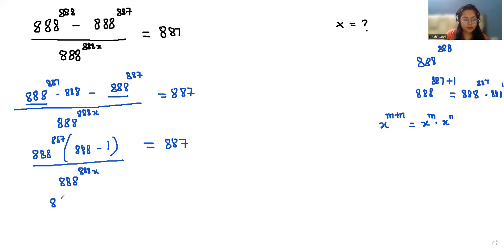888 power 887 divided by 888 power 888 x equals 887. Now I'm going to multiply and divide by 888 on both sides.